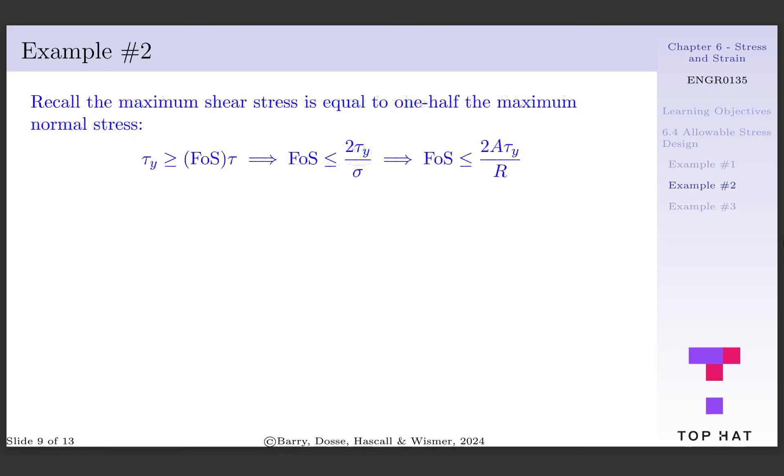The maximum shear stress is equal to one-half the maximum normal stress. So tau sub y will be greater than or equal to the factor of safety times tau. Rearranging this equation gives us that the factor of safety will be less than or equal to 2 tau sub y per sigma. Since stress is equal to force per area, this equation is also equal to 2 times A times tau sub y per R.